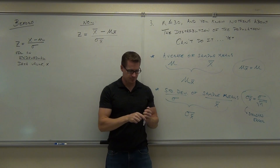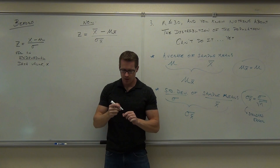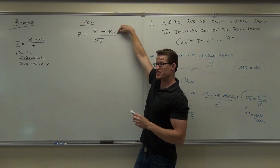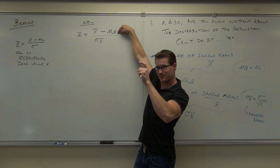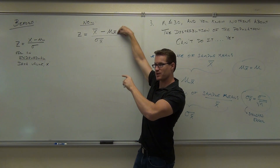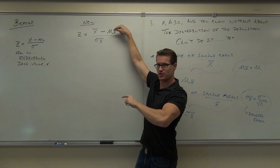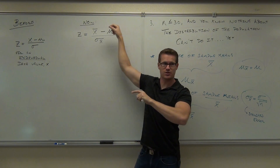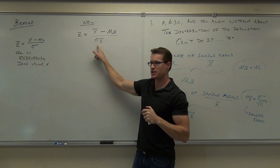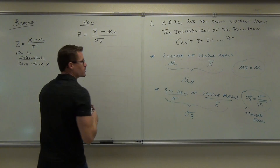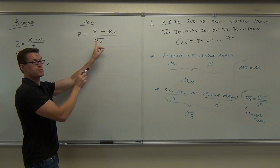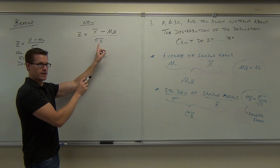Here's the problem. This implies that you have every single possible sample, found the average for each one, and then averaged those. Those are huge numbers of items, and the same thing applies to standard deviation. Fortunately, we know a couple things about this. Here's the transition — you're not going to use this the way it is.